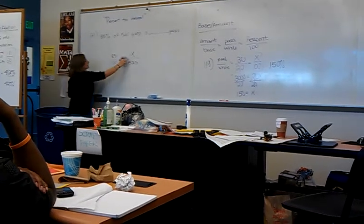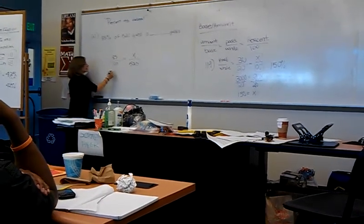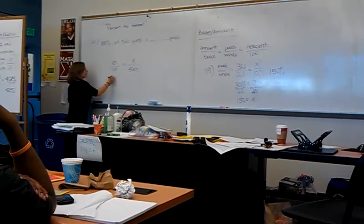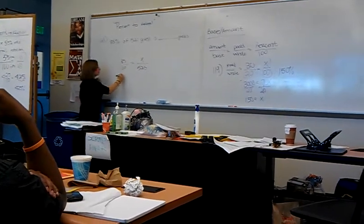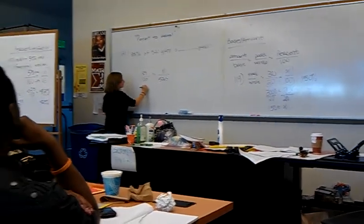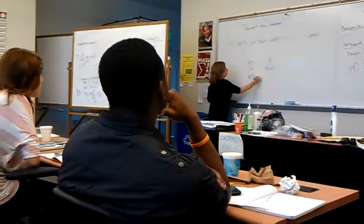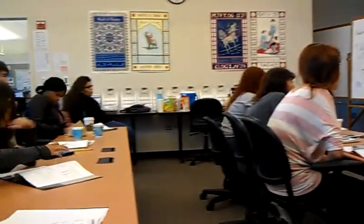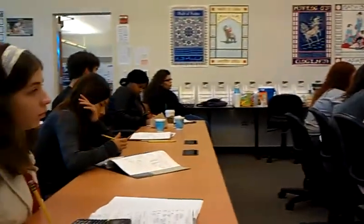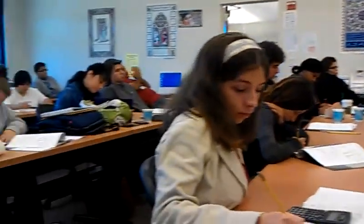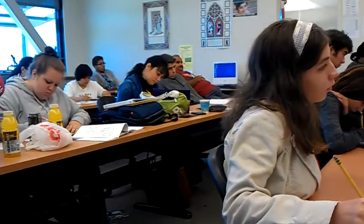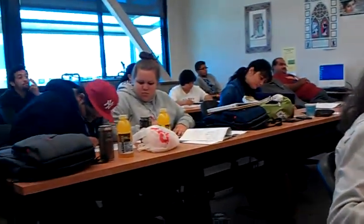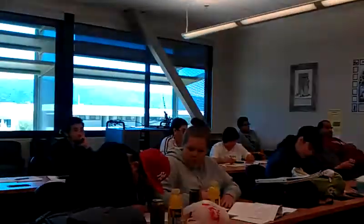So 100 times x is 100x. And then 85 times 520 — calculator time. 85 times 520.